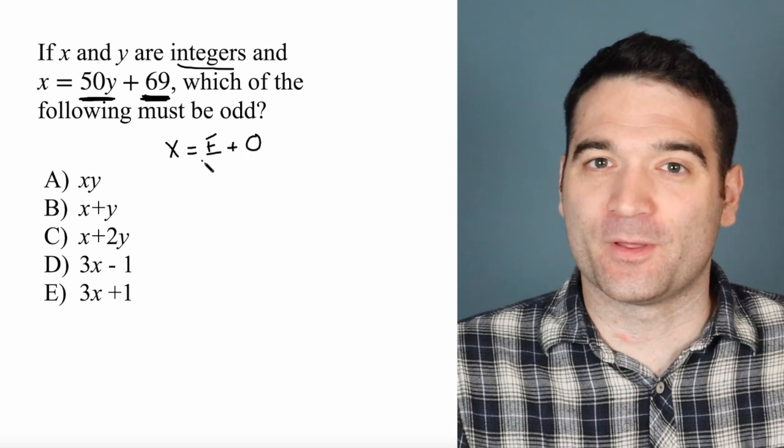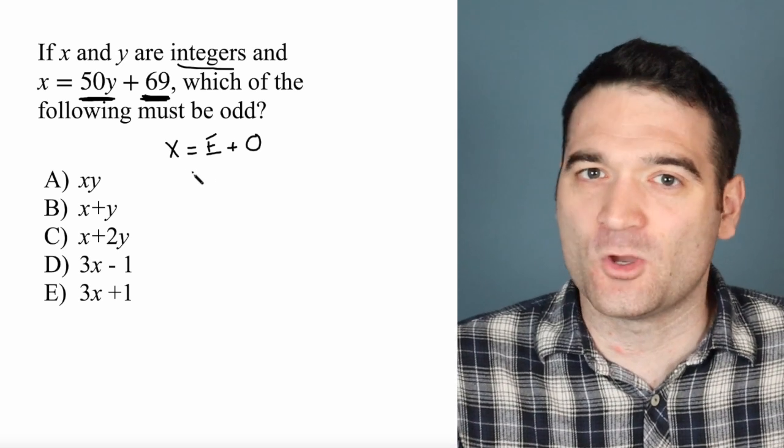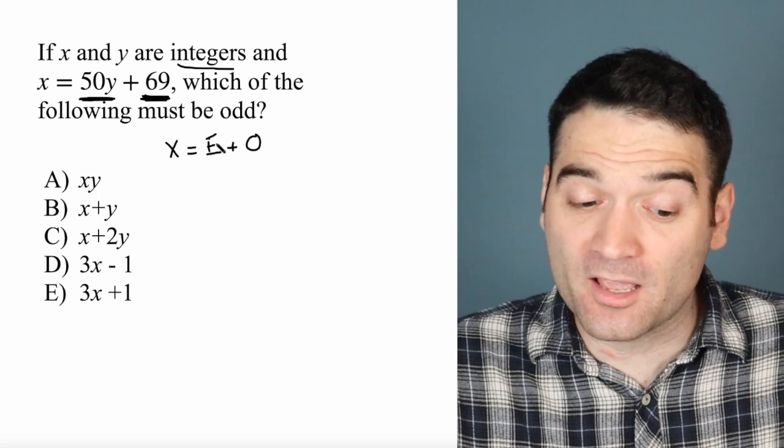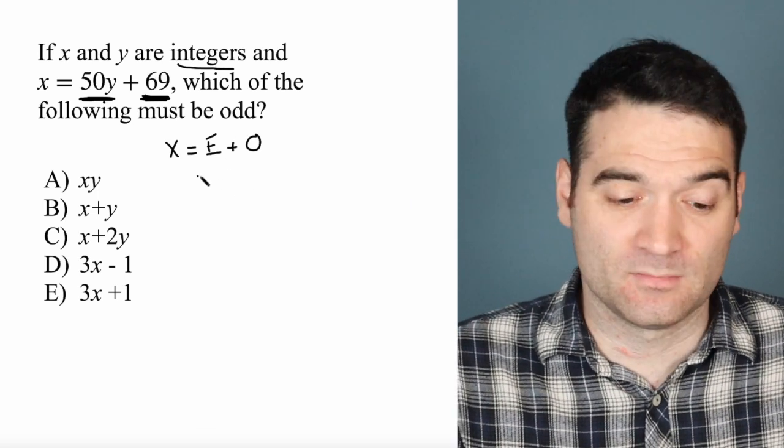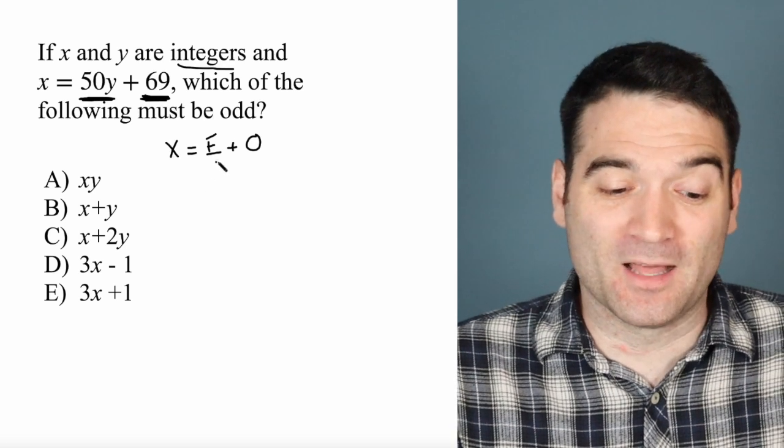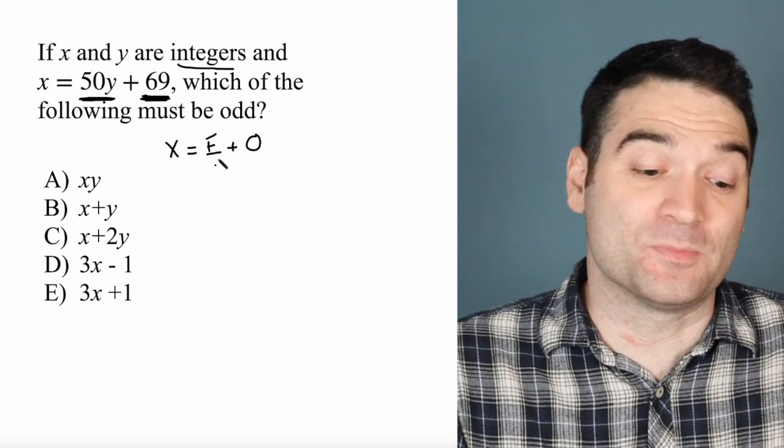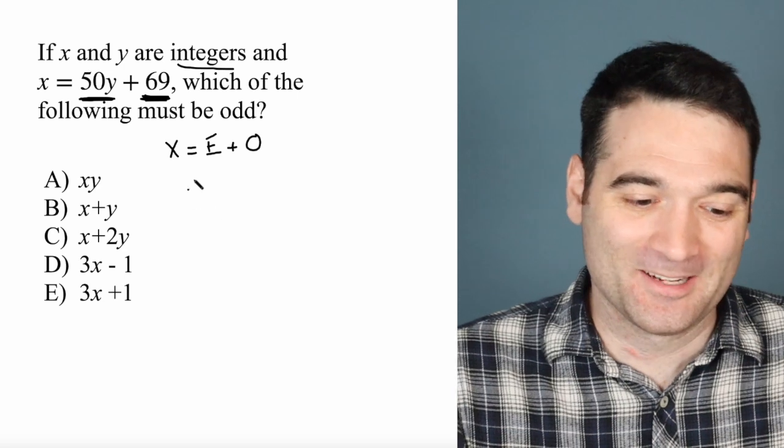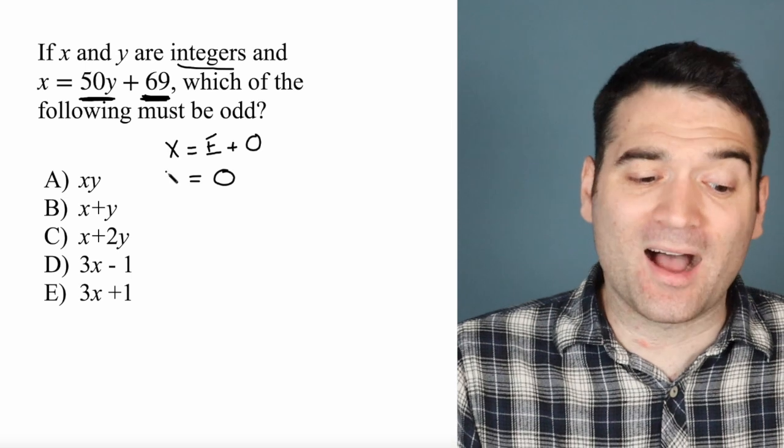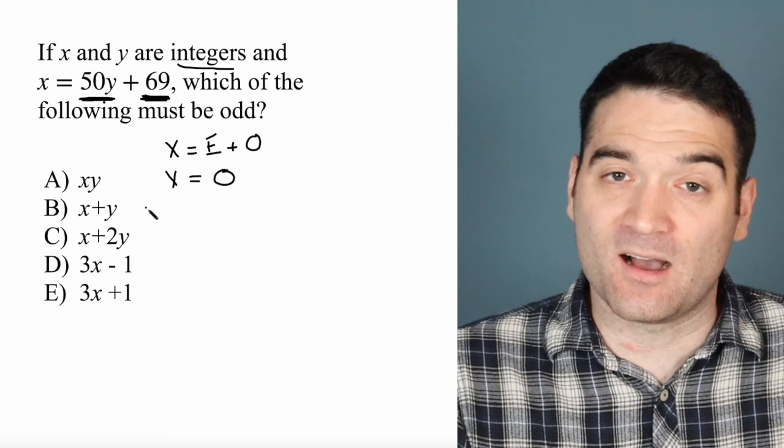And if you aren't familiar with even and odd rules, that's totally fine. You can prove it very easily to yourself with a few test cases. Plug in a few numbers: 2 plus 3, 7 plus 8, 12 plus 11. It's always going to come out to an odd number. So I know that x has to be odd.